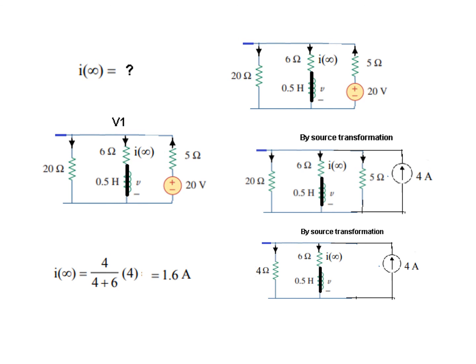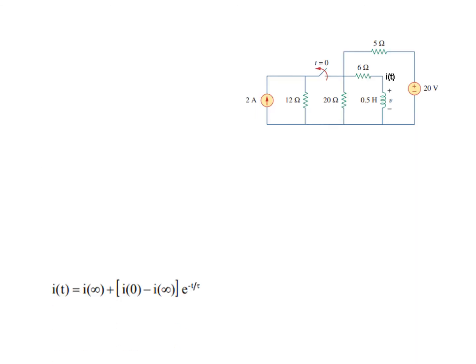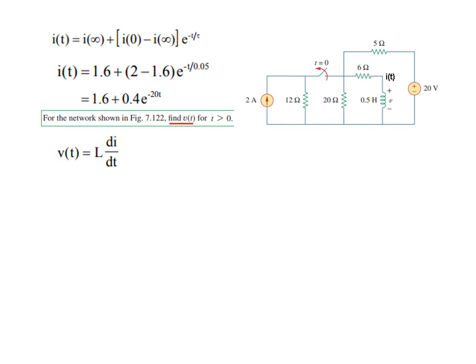Okay, now we have found all three parameters, so our final equation: plug in the values. This is the final equation. Simplified, this is the final value of i(t). Now in the question, we are asked to find V(t). So we need to find V(t). We have found i(t), and the formula for V(t) is L di/dt.